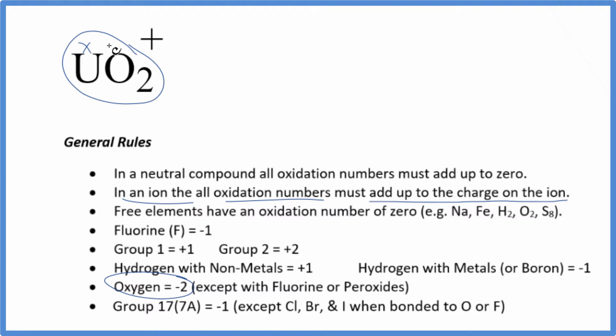So each oxygen is minus 2. We can just set an equation up to find out the oxidation number on the uranium because we have uranium X, two times minus 2, that's minus 4, that's going to equal the charge on the ion, which is 1 plus.